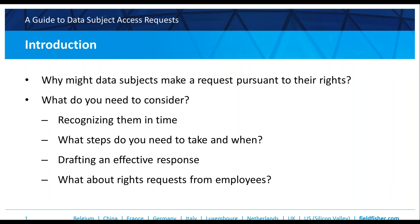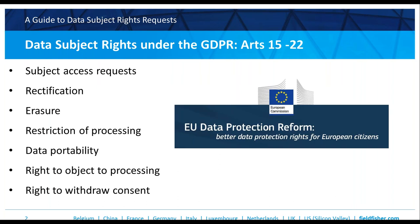Now over to Anna. The rights under the GDPR are listed in Articles 15 to 22. Today we're going to focus on the subject access request, which asks you to provide all the information you have about an individual. But there is also the right to rectification, the right to erasure — also called the right to be forgotten — the right to request a restriction of processing, the right to data portability, the right to object to processing, and the right to withdraw consent.